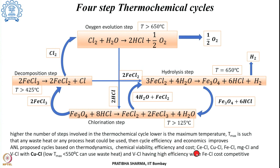Several chlorine-based cycles include the cerium-chlorine, copper-chlorine, iron-chlorine, magnesium-chlorine, and vanadium-chlorine cycles. Among these, the iron-chlorine cycle is more economical with lower cost. The vanadium-chlorine cycle has higher efficiency. For the copper-chlorine cycle, the required maximum temperature is lower — less than 550°C — such that waste heat from any industrial plant can be utilized, which is its biggest advantage.